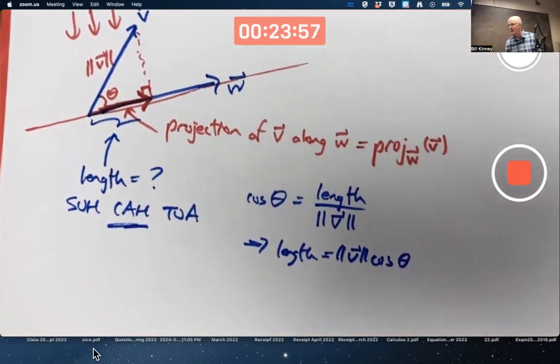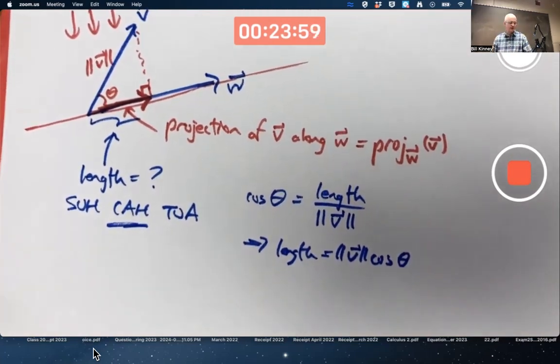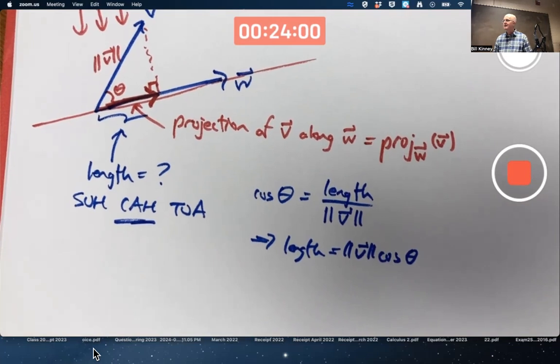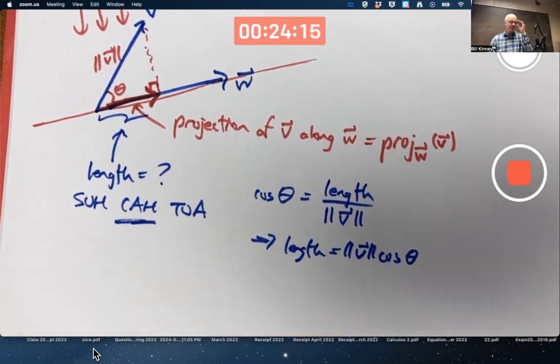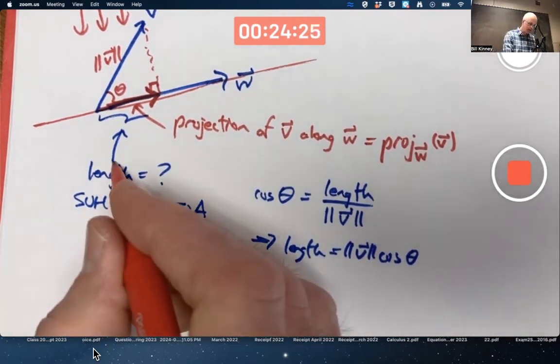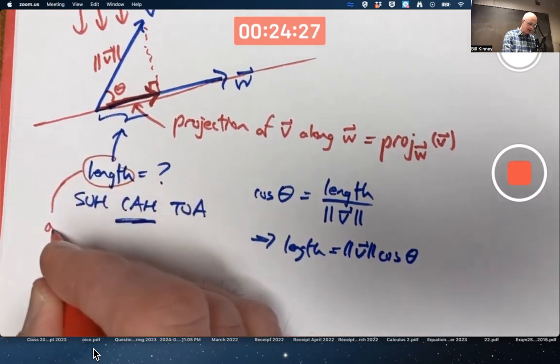Maybe you're somebody who's done that kind of thing so much, you could just write that down without doing this other stuff. You've done so many right triangle trigonometry problems in solving all your physics problems, you can do it in your sleep. That length is the length of the projection.